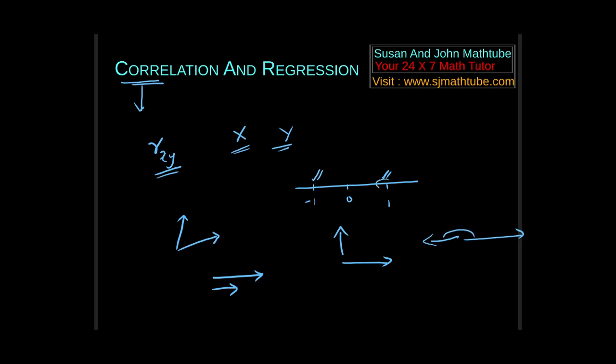Whenever you get an answer very near to 1, we write strong positive correlation. Positive correlation means two things growing together or falling together, moving in the same direction. Negative correlation means one parameter grows and the other parameter moves in the exact opposite direction.